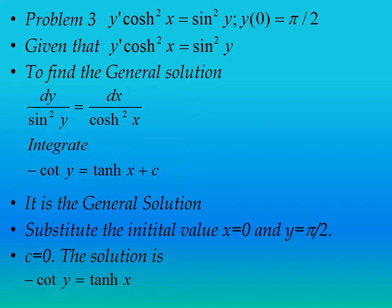Now substitute the initial value to get the particular solution. The initial value is x = 0, y = π/2. Substituting gives c = 0. So the particular solution is -cot y = tanh x.